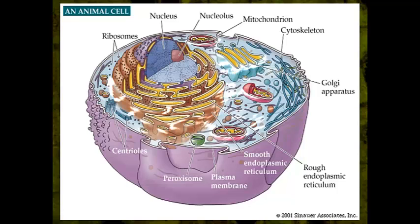This is the animal cell. It has a cell membrane right here — it's not as rigid, so it doesn't have a cell wall. Another word for cell membrane is plasma membrane. Animal cells do have very small vacuoles, little pockets that hold water, but they do not have chloroplasts — chloroplasts are not in animal cells. You can see mitochondria are present.